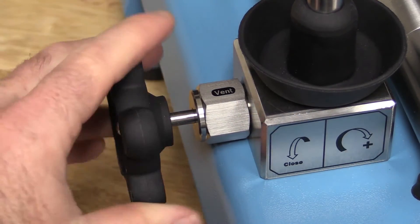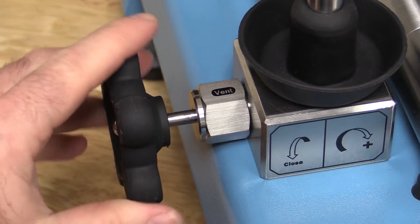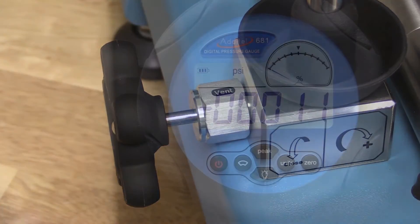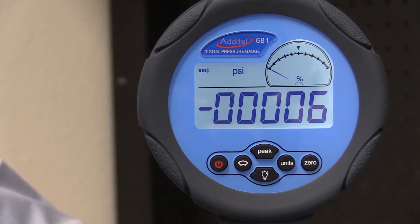Now that we have a vacuum pulled on the system, we will open the vent valve and let the fluid fill into the system. You'll notice this by the gauge settling to zero.